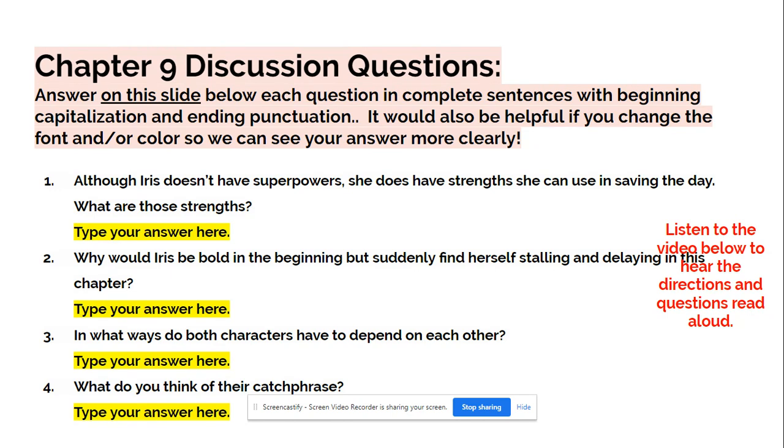Number two: Why would Iris be bold in the beginning but suddenly find herself stalling and delaying in this chapter?